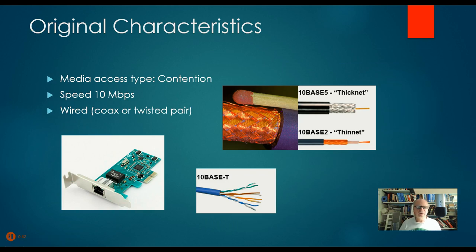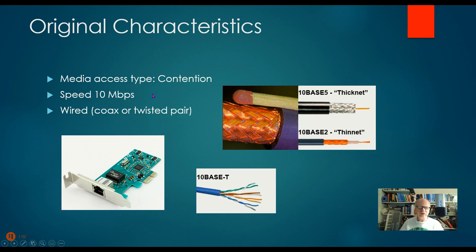The original characteristics: the media access type was contention. The idea was we will not use polling, we will not use Token Ring — we're going to use this sort of random access contention. The speed of the original Ethernet was 10 megabits per second. Technically, any time you say Ethernet, you're talking about only 10 megabits per second.